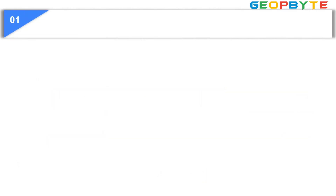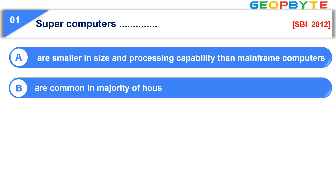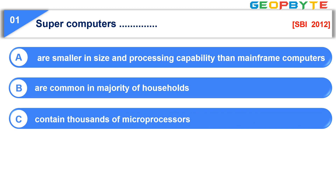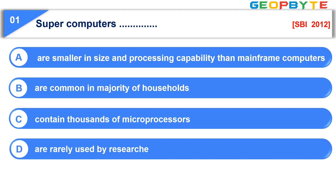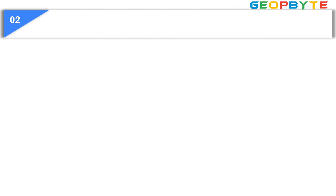Question number one: Supercomputers — option A: are smaller in size and processing capability than mainframe computers; option B: are common in majority of households; option C: contain thousands of microprocessors; option D: are rarely used by researchers due to their lack of computing capacity; option E: are of the same size as laptops. The correct answer is option C: contain thousands of microprocessors.